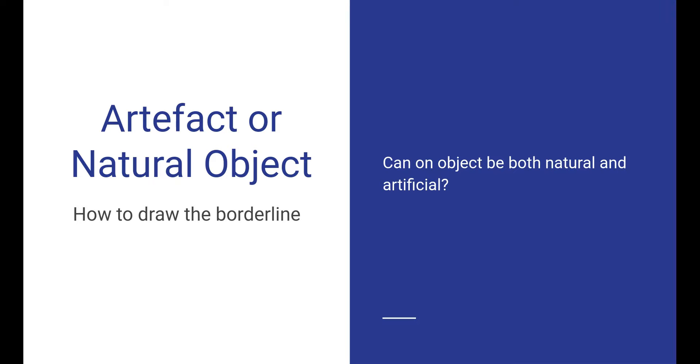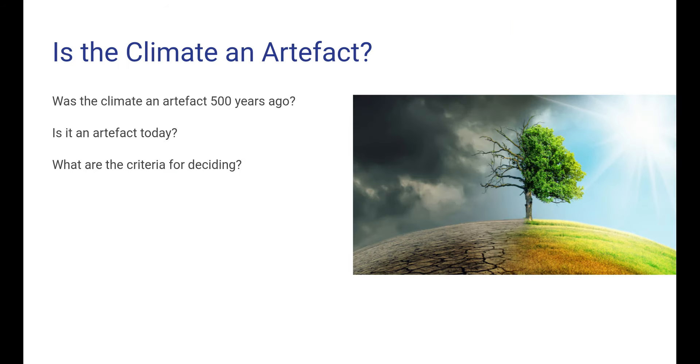OK, another case here, and again it's the difficulty to draw a borderline between artifacts and natural objects. Can some object be both natural and artificial? For example, here is the climate an artifact? And to start thinking about that, think about was the climate an artifact 500 years ago? And is it an artifact today? And what are the criteria for deciding upon this? Well, I don't want to take the fun out of this and provide some kind of answer. Instead I will leave this to you and think more about it. And if you would like to, please share your ideas in the discussion forum.